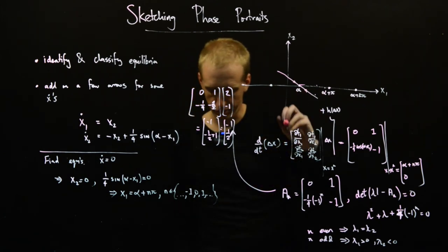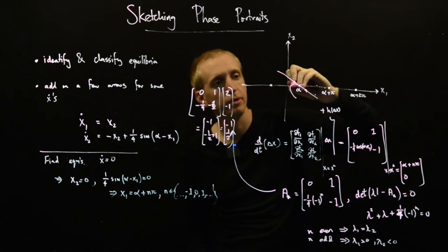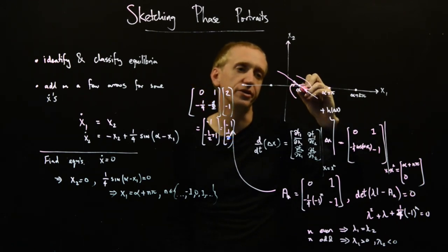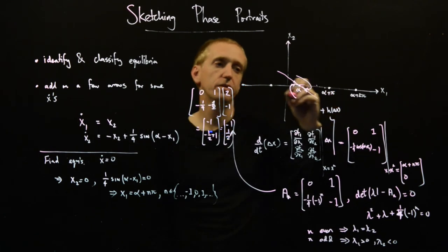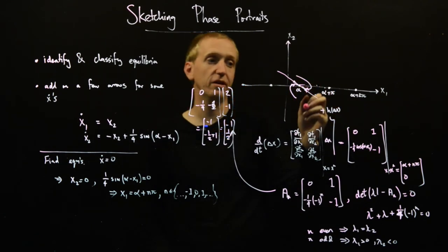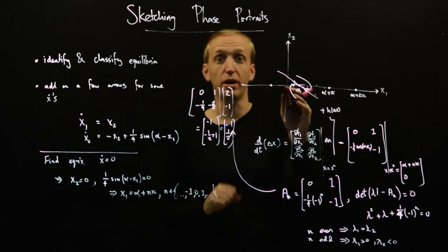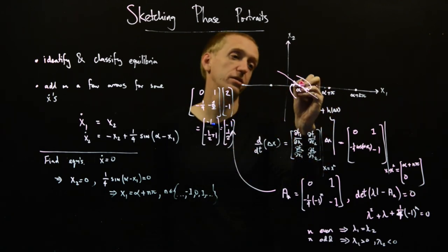And then we're in this case where our trajectories will sort of... So this is our kind of special repeated eigenvalue case. It sort of looks like a node, but there's only one eigenvector rather than two eigenvectors.